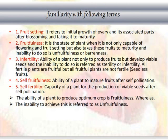Fruitfulness is the state of the plant when it is not only capable of flowering and fruit setting but also takes the fruit to maturity; inability to do so is unfruitfulness or barrenness. Infertility refers to the ability of the plant not only to produce fruits but to develop viable seeds; inability to do so is referred to as sterility or infertility. All fertile plants are fruitful but not all fruitful plants are fertile. Self-unfruitfulness is the inability of the plant to mature fruits after self-pollination. Self-sterility is the incapacity of a plant to produce viable seeds after self-pollination. The ability of the plant to produce the optimum crop is fruitfulness, whereas the inability to achieve this is referred to as unfruitfulness.